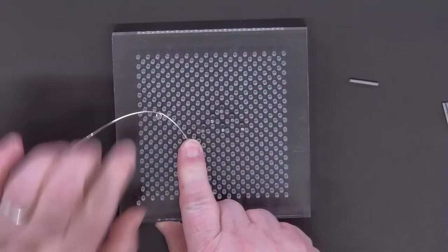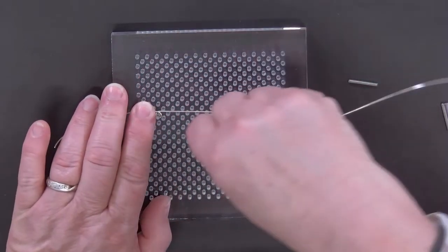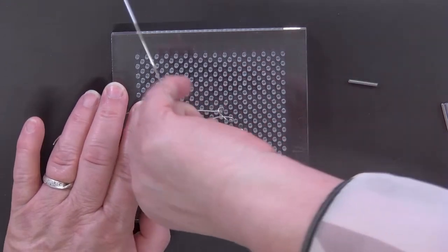So you just start by wrapping your wire around your anchoring peg and then you can start going to and fro around the other pegs.